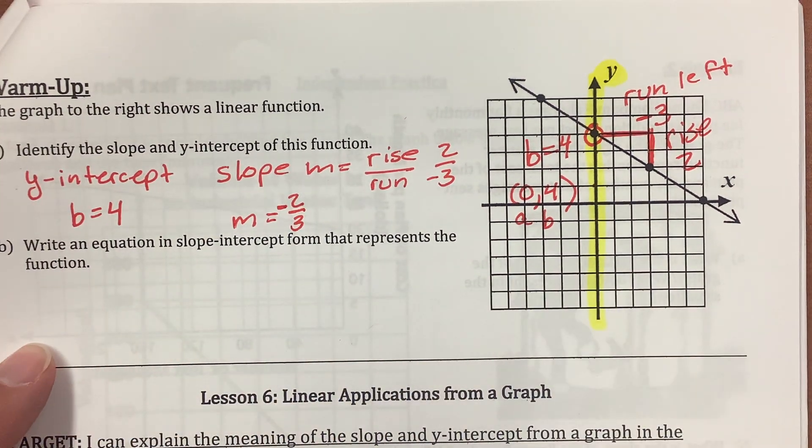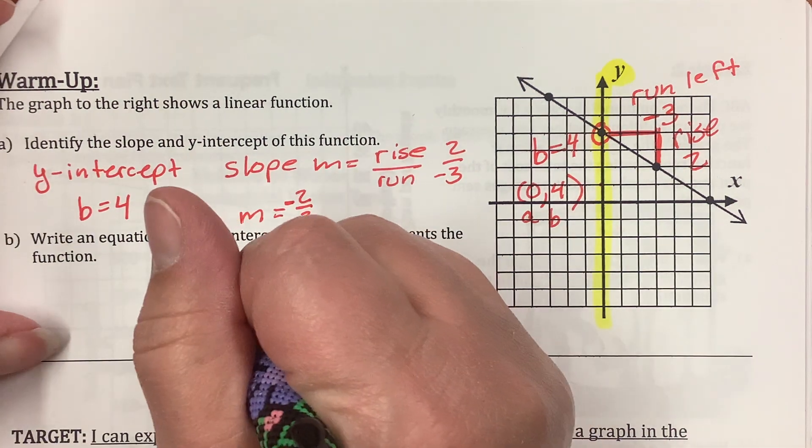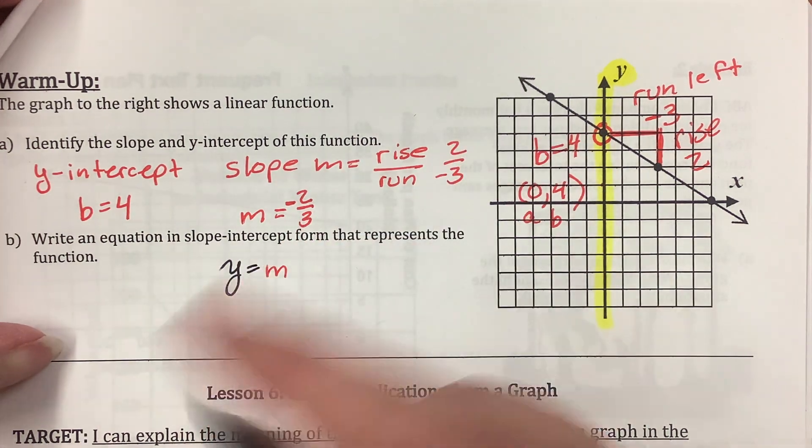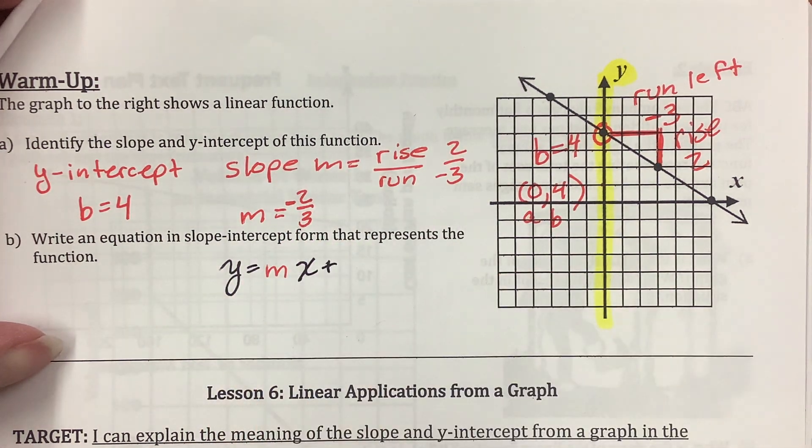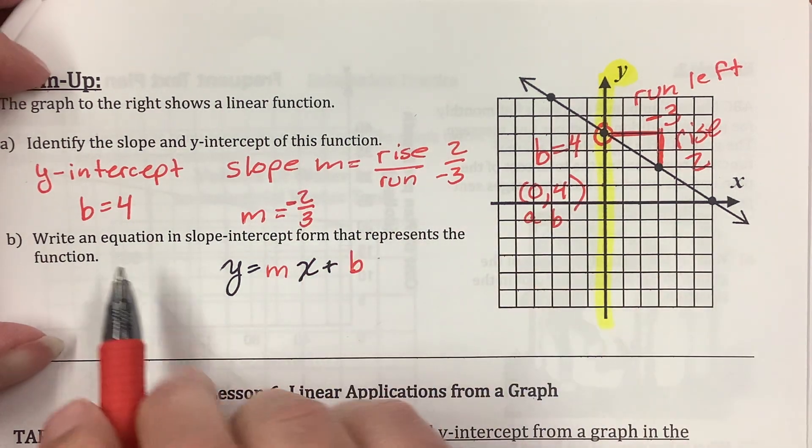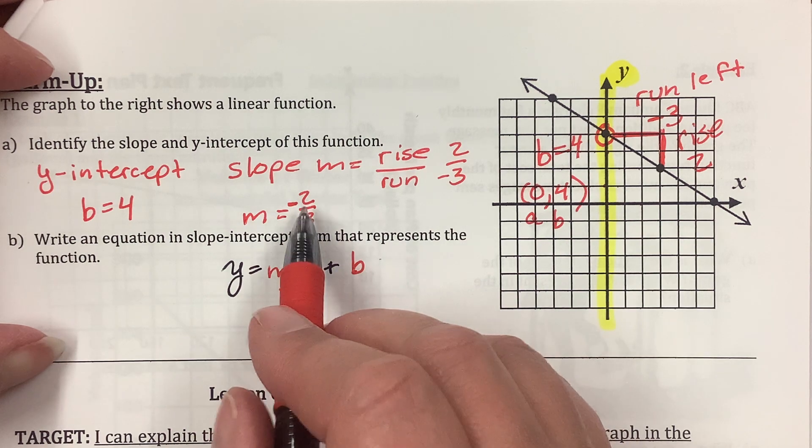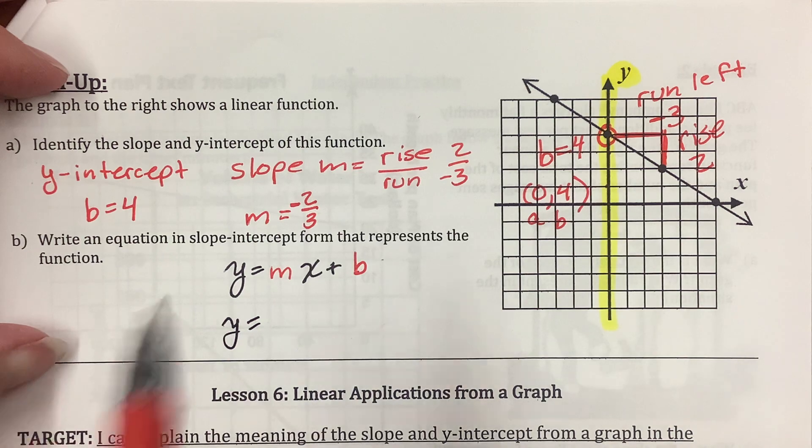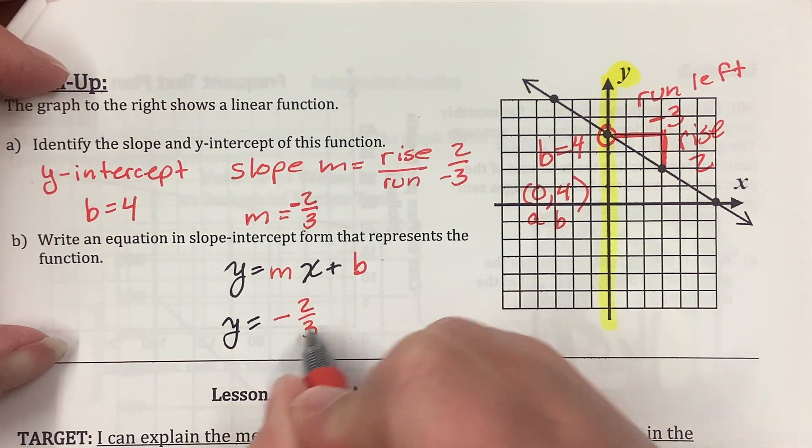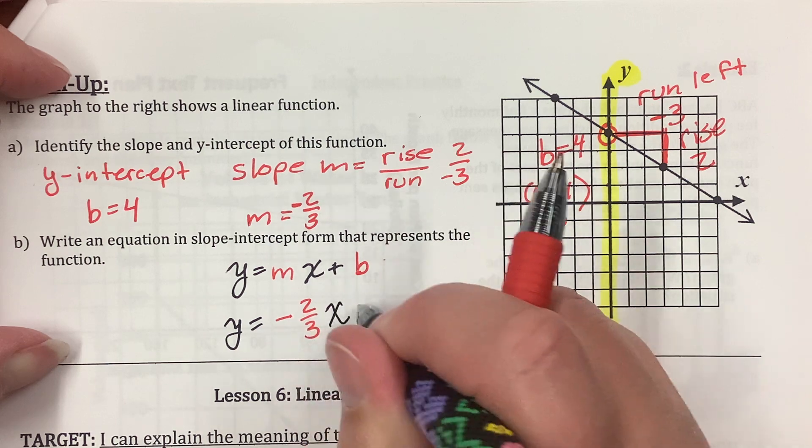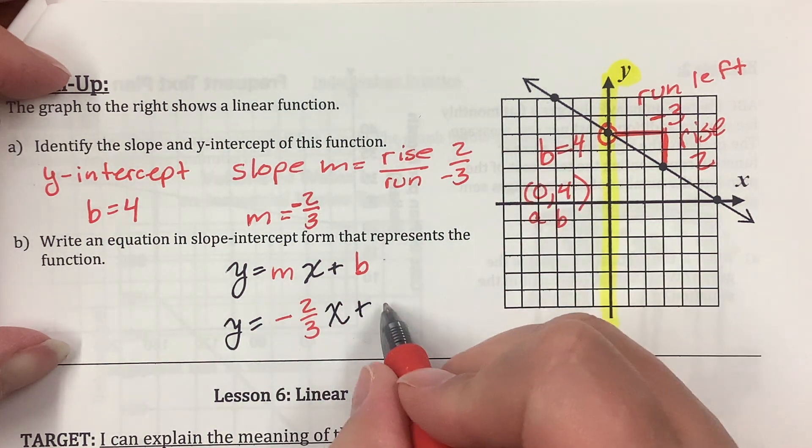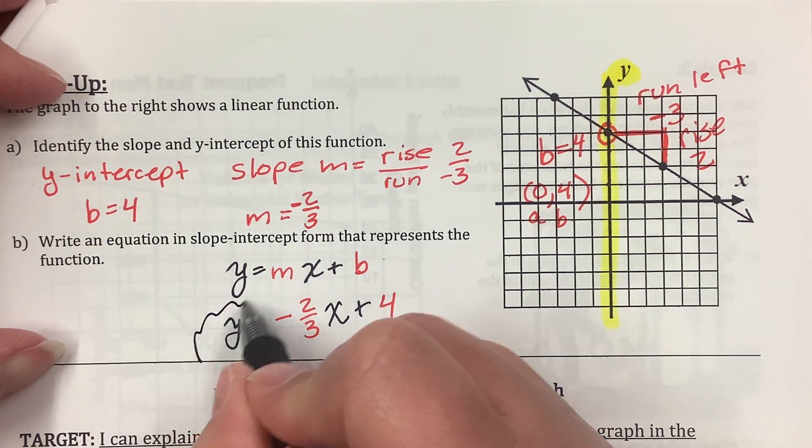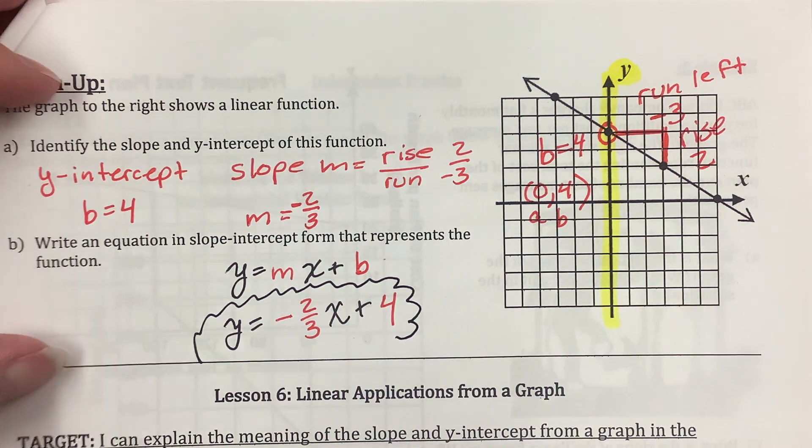Write an equation in slope-intercept form that represents the function. Okay, y equals mx plus b. So now I just have to fill in b is 4, and m is negative 2 thirds. y equals negative 2 thirds x plus 4. Puffy cloud of happiness, because that's my slope and y-intercept.